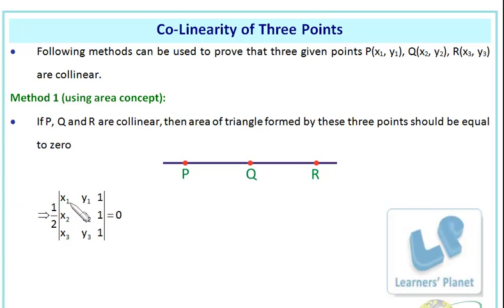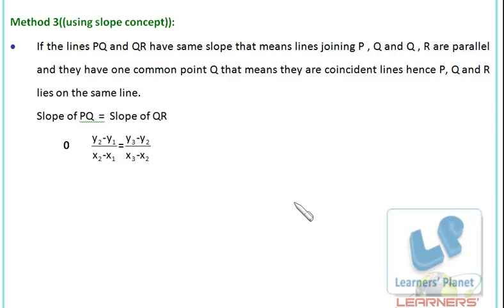One method uses the area of a triangle formula from junior classes: Area = (1/2) × |determinant of [x1, y1, 1; x2, y2, 1; x3, y3, 1]|. If the area of this triangle is 0, the triangle does not exist, which means the three points are collinear. So when the area equals zero, the three points are collinear.